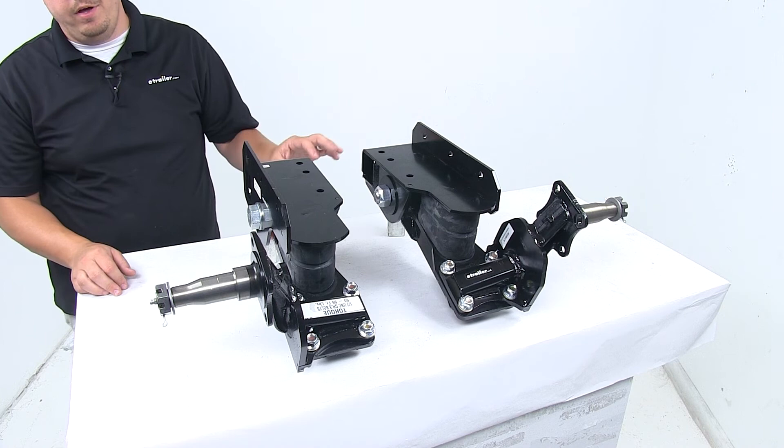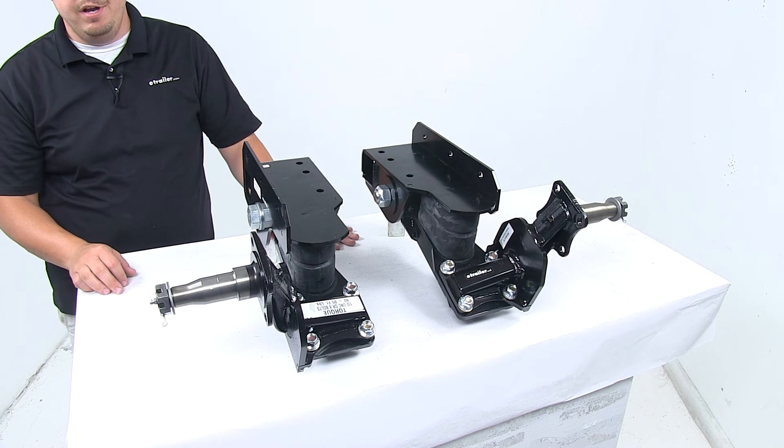You'll get two suspension units without hubs. They work with Dexter 1,750 pound hubs.